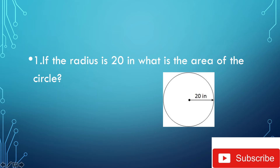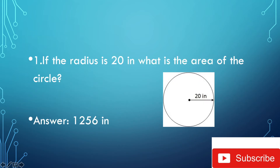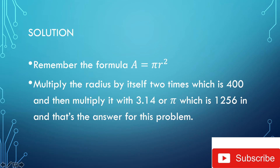You can pause this video to solve it. Are you done? The answer is 1,256 inches. Now let's go to the solution. Remember the formula: A is equal to pi times r squared. Multiply the radius by itself 2 times — 20 times 20 is equal to 400. Then multiply it with 3.14 or pi, which gives 1,256 inches. That's the answer for this problem.